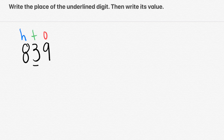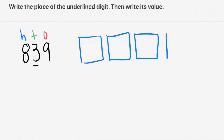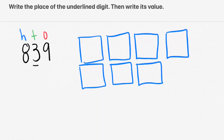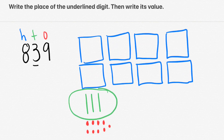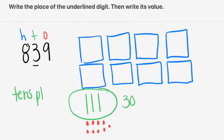839. We notice there's an 8 in the 100s place, so that means we need 800. There's a 3 in the 10s place, so we need 3 tens. There's a 9 in the 1s place, so we need 9 ones. The digit that's underlined is a 3, so we're working with our 10s. Let's go ahead and encircle our 10s. Because those are 10s, that means there's actually 10, 20, 30 — not just 3. So that was the 10s place, which means that 3 is actually worth 30.